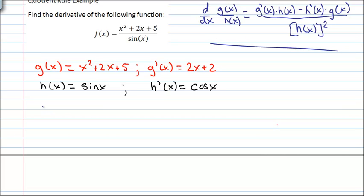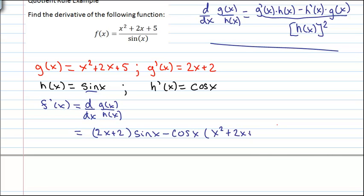So we're just going to use this rule right here. f prime of x will equal d by dx of g of x over h of x, which is equal to g prime of x times h of x. So we have 2x plus 2 multiplied by sine x minus h prime of x cos x times g of x. So times x squared plus 2x plus 5.